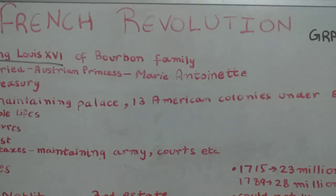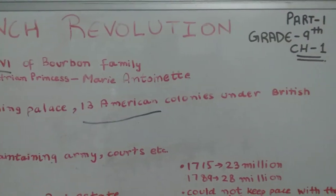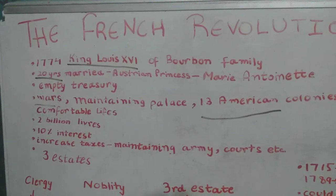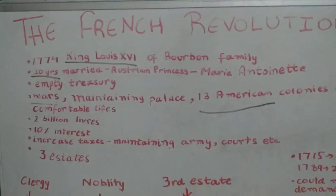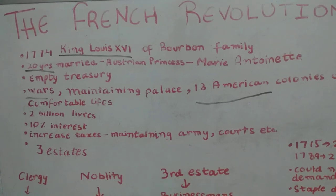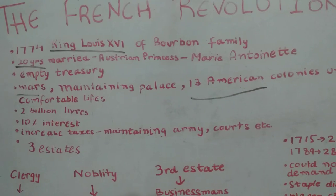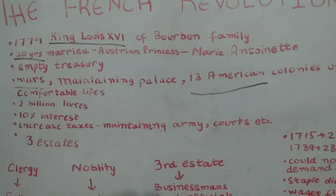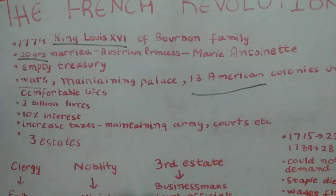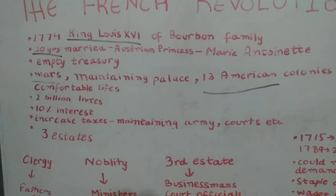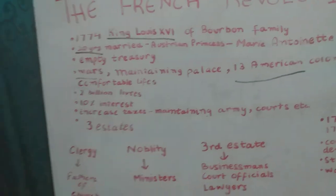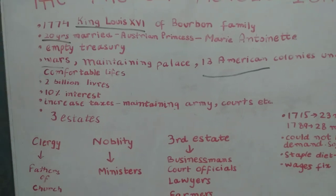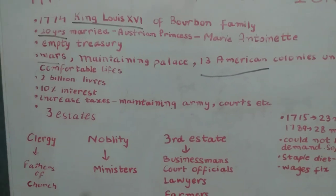There were 13 American colonies under the British, and France supported their independence because Britain was an enemy — they wanted to bring Britain down. Another reason for France's financial trouble was that the king and court lived a very luxurious and comfortable life, which cost a lot of money and required high taxes over the years.